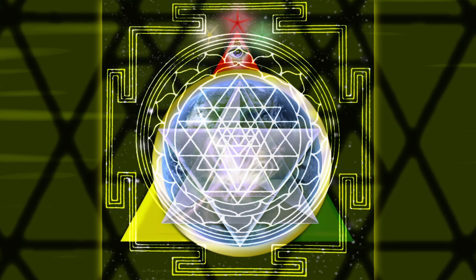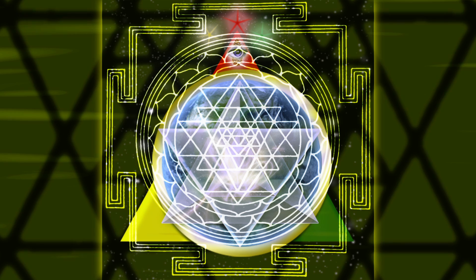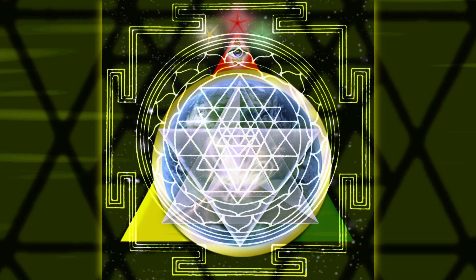So now begin to envision this beautiful, beautiful golden shield all around you, perhaps about 12 inches away from your body, just like a cocoon, an overshape. This is to shield your auric field, or your personal energy field. Make it thick, very thick.